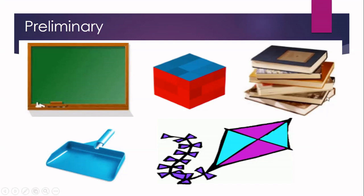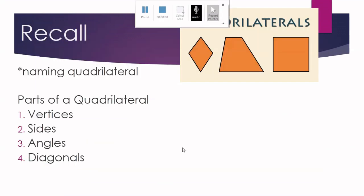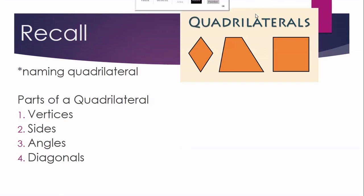To start, let us recall how you are going to name a quadrilateral. Let us consider this one. If we have here A, B, C, and D, how are you going to name this quadrilateral? In naming a quadrilateral, you can start at any vertex. You can go clockwise or counterclockwise. So this specific quadrilateral can be named as quadrilateral ABCD, also as BCDA, CDAB, and DABC.